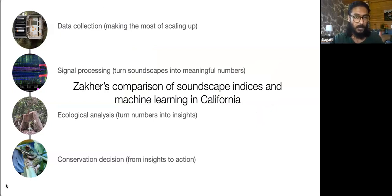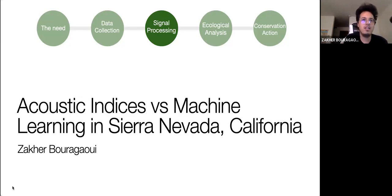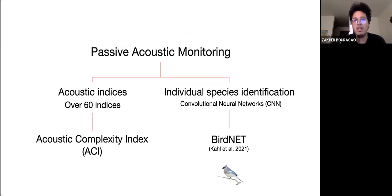Hello everyone. I'm happy to share my research, which is mainly centered around comparing acoustic indices and bird species richness derived from BirdNET in the Sierra Nevada, California. Acoustic data can be analyzed in two different ways. The first is acoustic indices — today we have over 60 indices that provide a summary of spectral and temporal information, and they may provide an opportunity to monitor biodiversity without the need to identify specific species. On the other hand, we have classifiers and convolutional neural networks that focus on identifying species or species-specific acoustic events.